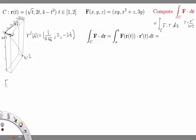The other thing we need to know is our vector field F evaluated at an arbitrary point r(t), so that's F evaluated at (√t, 2t, 4 - t²).